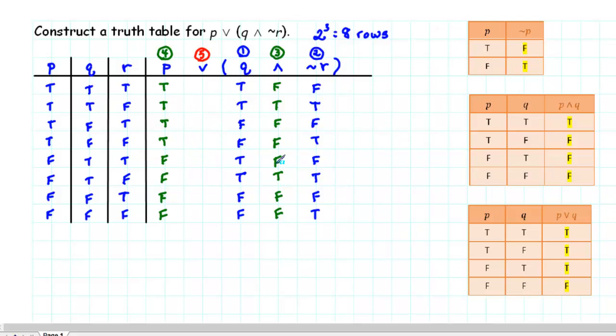So we see that in the fifth row, both parts are false. In the seventh row, both parts are false. And in the eighth row, both parts are false. In all the other rows, there's at least one true, and so the remaining truth values will be true.